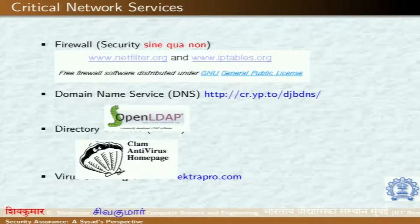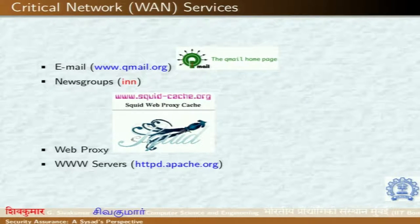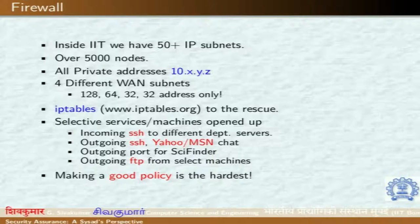Good LAN design involves some key software. DJB DNS has given way to TinyDNS, OpenLDAP is still used, ClamAV for antivirus, Squid is one of the best proxy softwares, and Postfix has replaced qmail for email. We have many subnets, many nodes, all private addresses, and three WAN links now. IP tables will be the focus of the next 10–15 minutes — controlling who among 5,000 users can do what.